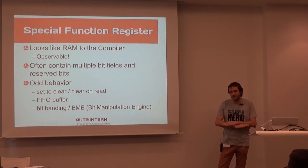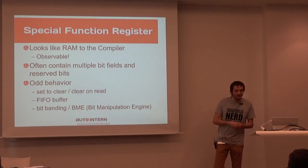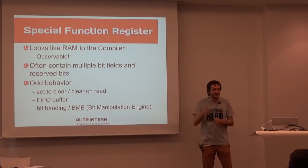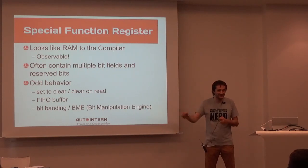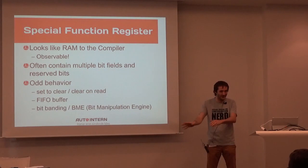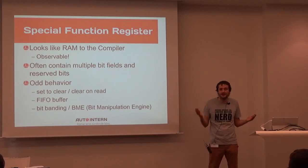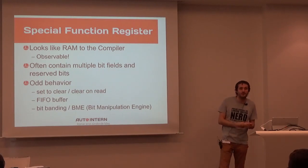The optimizer doesn't understand any of this. So we hit it over the head with volatile and say, don't touch this, don't optimize this, you don't understand it. And it doesn't. And our code works, but it's not particularly optimized.